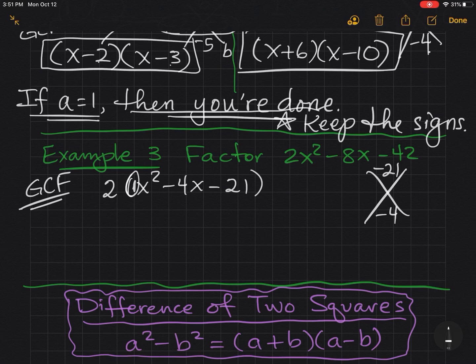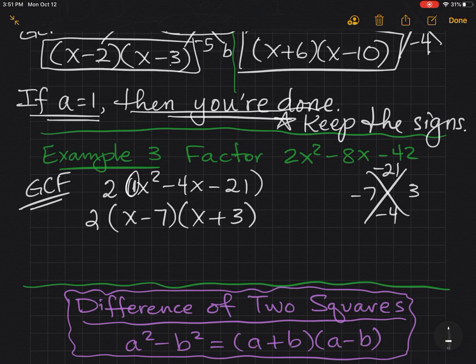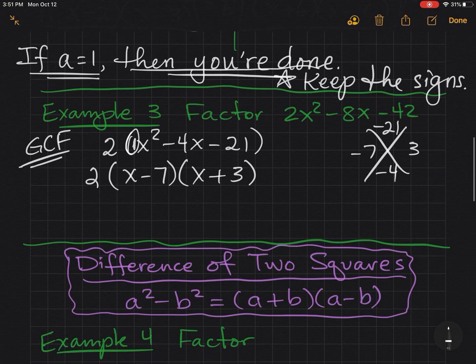So now I can make my diamond negative 21, negative 4. I'm looking at 7 and 3, negative on the 7. So the 2 is still out front, x minus 7, x plus 3. And we're good.